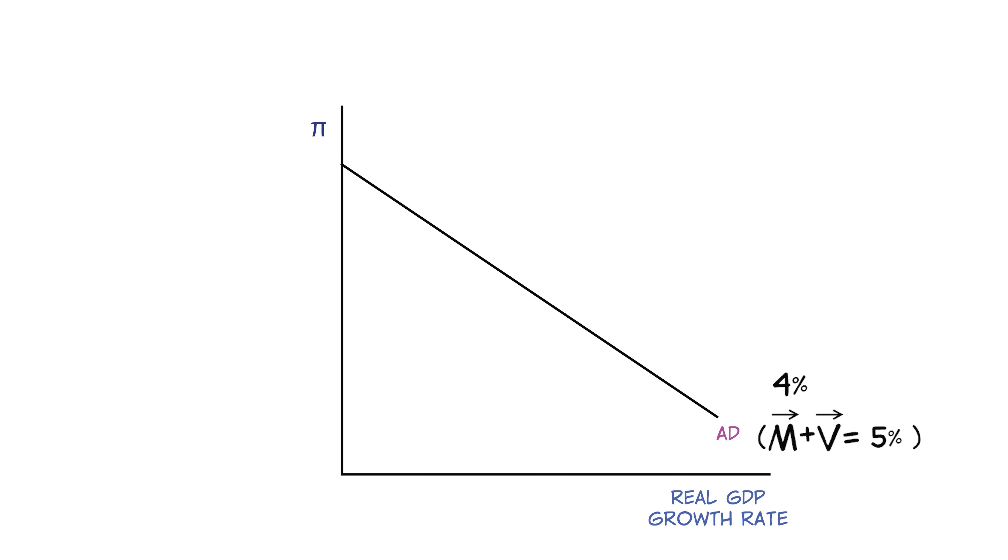So for example, say money growth is 4% and velocity is 1% for a total of 5%. Then any combination of inflation and real GDP growth must add to 5%. Alternatively, since the inflation rate plus the growth rate of real GDP is the growth rate of nominal GDP, we can also say that the AD curve shows all the combinations of inflation and real growth which give the same growth rate of nominal GDP.